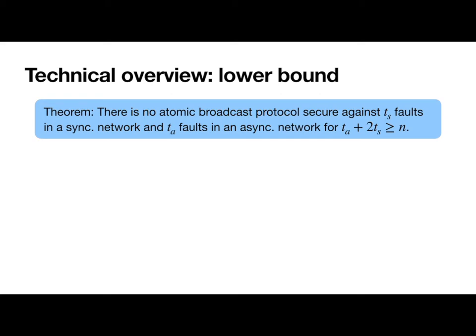The proof follows from a generalization of Togue's classical lower bound for randomized Byzantine agreement. The intuition is that when TA plus 2 TS is greater than or equal to N, an honest party might not be able to distinguish between executions where the network is synchronous and a set of malicious parties are refusing to participate, and executions where the network is asynchronous and messages from a set of honest parties are very delayed.